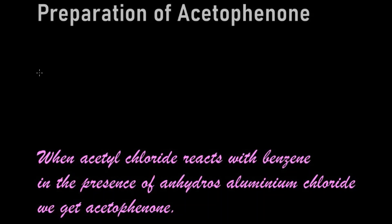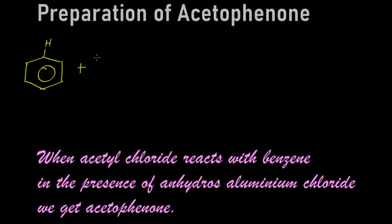In this video we are going to learn the preparation of acetophenone from acetylchloride and benzene. Let's write the structure of benzene — this is benzene, with hydrogens. We are going to treat it with acetylchloride, which has the structure Cl-C(=O)-CH3.